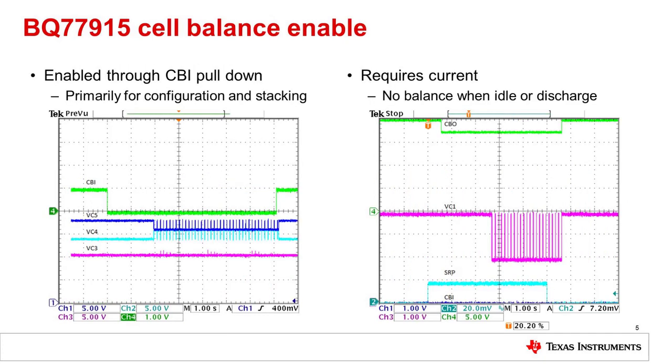Cell balancing is controlled by the CBI input pin. When CBI is pulled down, balancing will be enabled. When conditions for balance are met, balancing will begin after enable. In a simple design, balancing might always be enabled by pulling the CBI pin to ground.